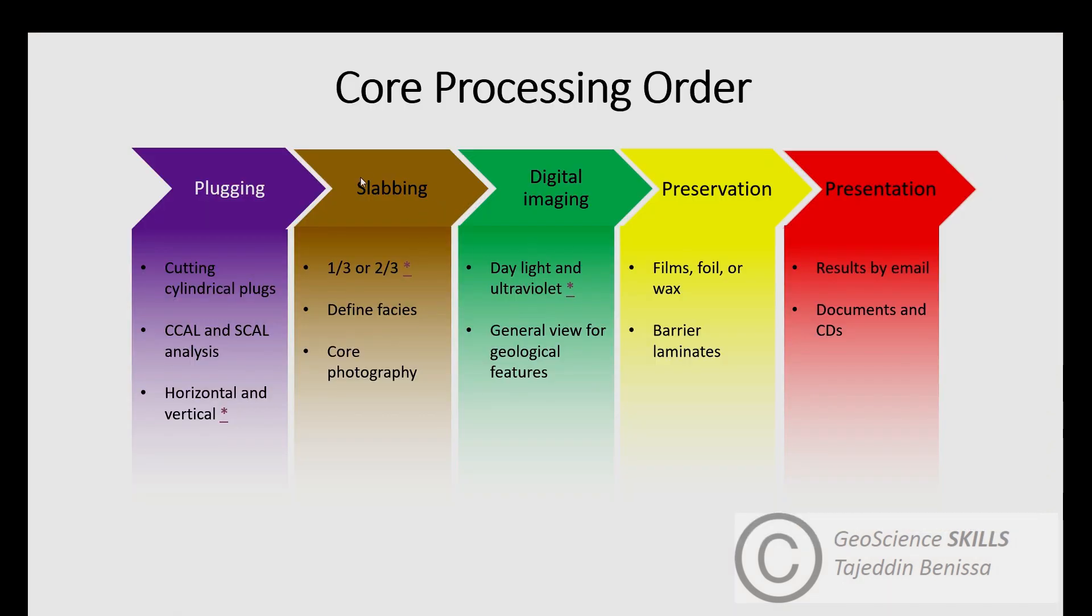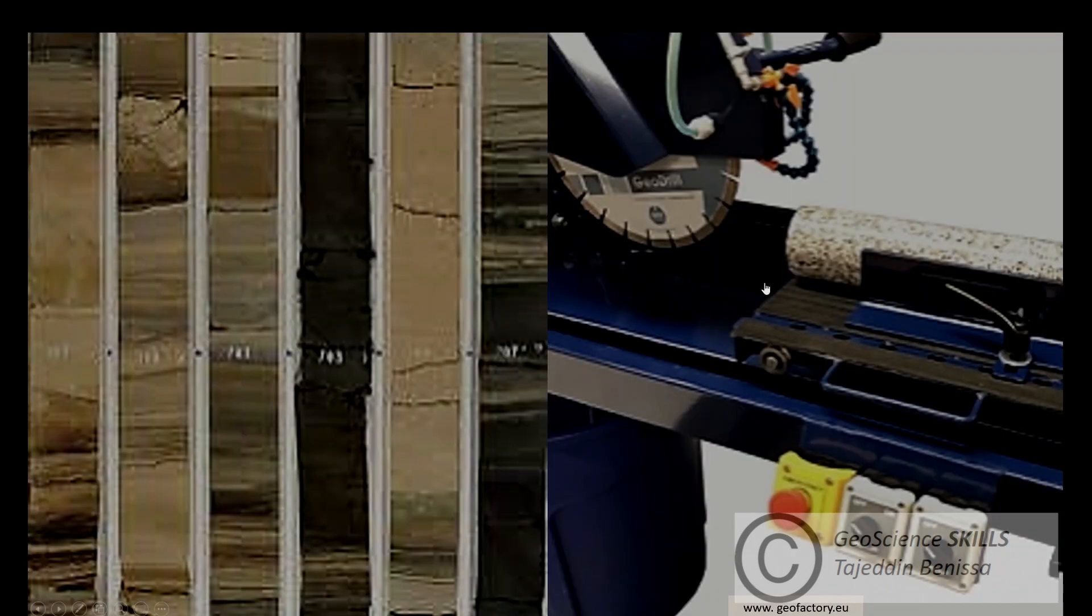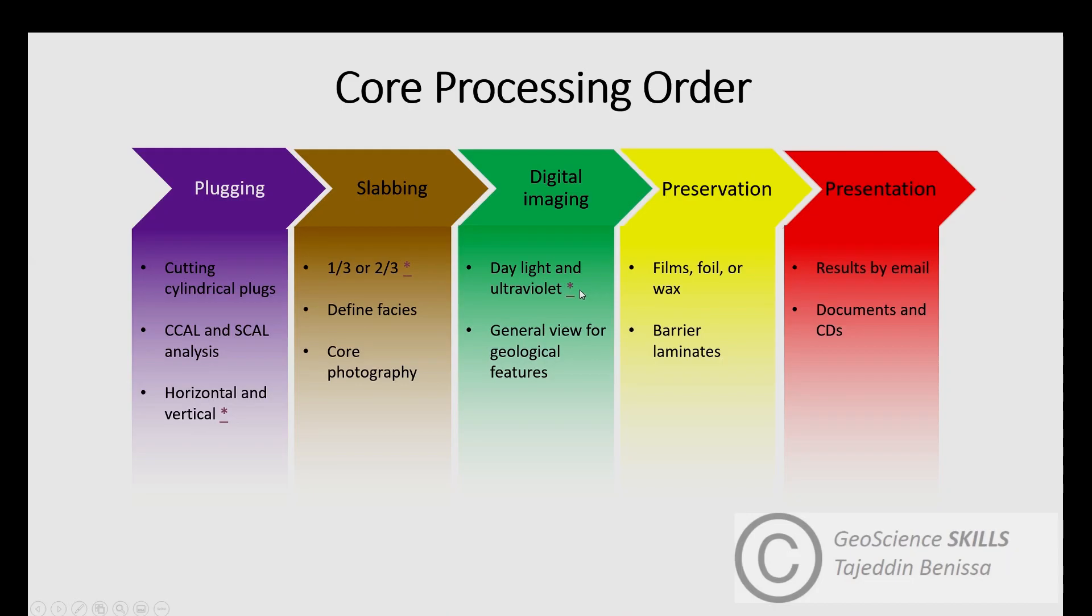Then we move to slabbing. Slabbing is the process where core samples are cut into two parts using an electrical saw machine like the one we see here. Slab core cutting criteria is usually one-to-third or two-to-third, depending on the objective from slabbing. Slabbing is essential for the next sample preparation process, which is digital imaging, core logging, or core description.